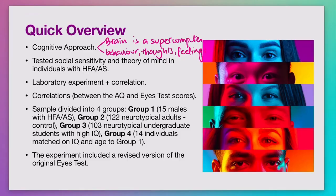Baron Cohen was the lead author of this study and he is somebody who has done extensive amounts of work on autism in particular. In this study he used a test called the Eyes Test, but he used a revised version because he had originally used this Eyes Test back in the 90s and there were some issues in the findings. He wanted to make sure that the test was more effective in determining how people with autism are able to understand social cues and figure out how the revised Eyes Test can be used effectively in that context.